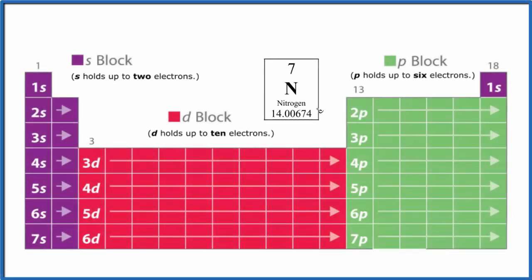In this video we'll write the atomic orbital diagram for nitrogen, that's N on the periodic table. The first thing we need is the electron configuration for nitrogen so we can use that to do the atomic orbital diagram.